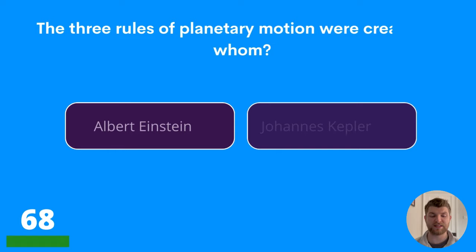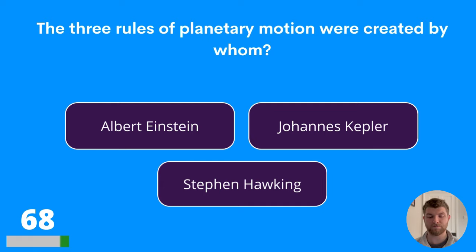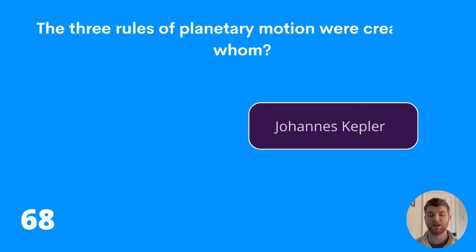Question sixty-eight: the three rules of planetary motion were created by whom? Albert Einstein, Johannes Kepler, or Stephen Hawking? The answer is Johannes Kepler.